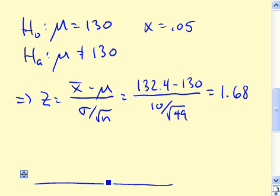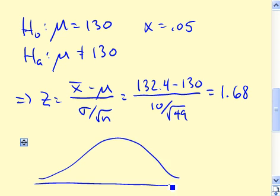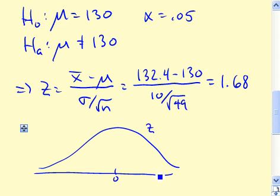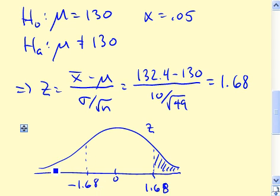So now if we draw a picture of our standard normal distribution. So this is z, it's centered at 0. 1.68 is around there somewhere. Now the p-value is equal to the area in this tail here, plus the area in the corresponding tail at the lower end, minus 1.68. This part right here. The two tails have the same area, so either one of them will do, and then you can just double it.